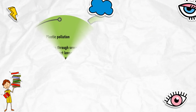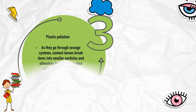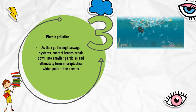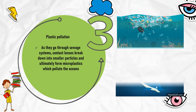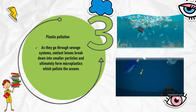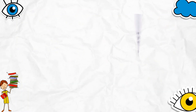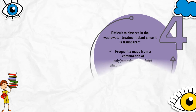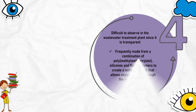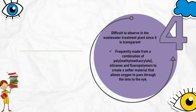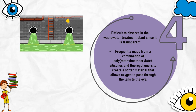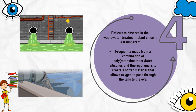Plastic pollution: most plastic waste from contact lenses and their packaging ends up in the ocean or in landfill. As they go through sewage systems, contact lenses break down into smaller particles and ultimately form microplastics which pollute the oceans. Contact lenses are transparent, making them difficult to observe in wastewater treatment plants. They are frequently made with a combination of polymethyl methacrylate, silicones, and fluoropolymers, creating a softer material that allows oxygen to pass through to the eye — making processing in wastewater plants a challenge.